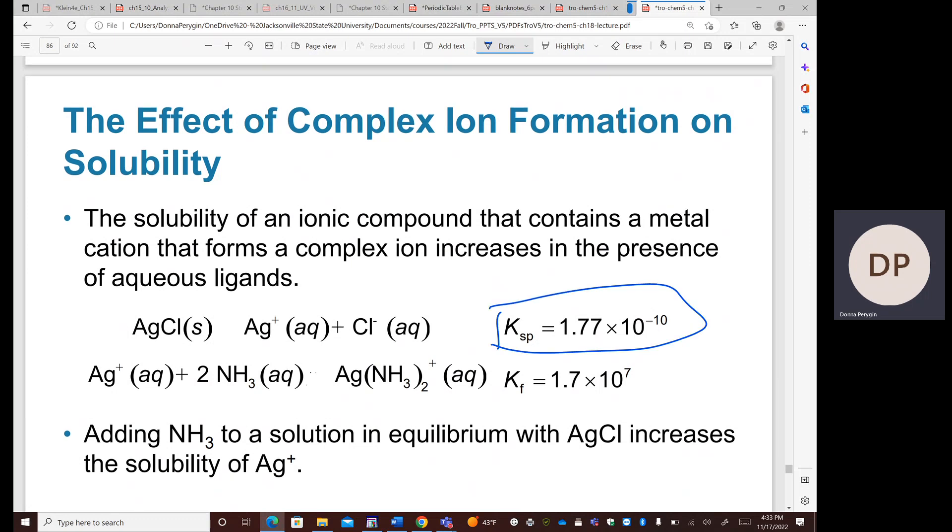If you have silver chloride in water, the Ksp for that system is 1.77 times 10 to the minus 10. So that salt is not very soluble in water. But if you add ammonia such that the silver can actually form a complex in solution, then we get these ammonia ligands which are complexed with the silver.